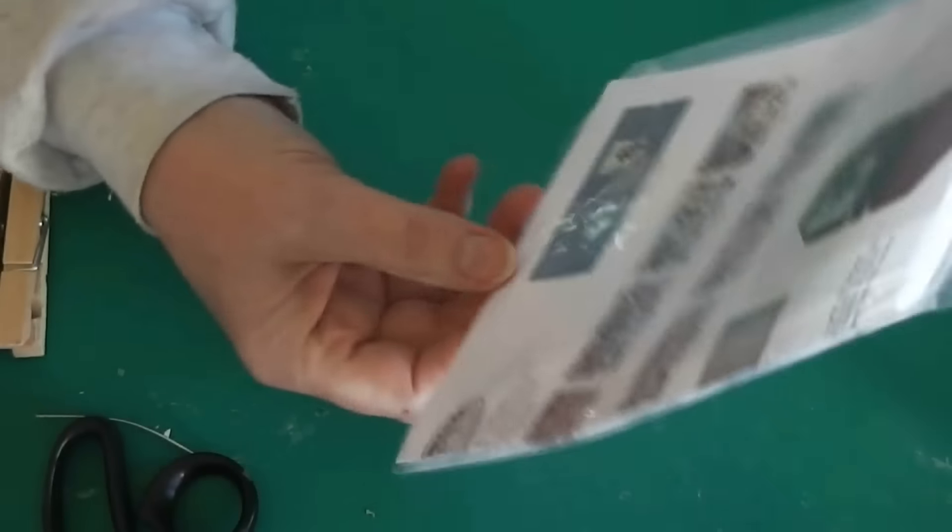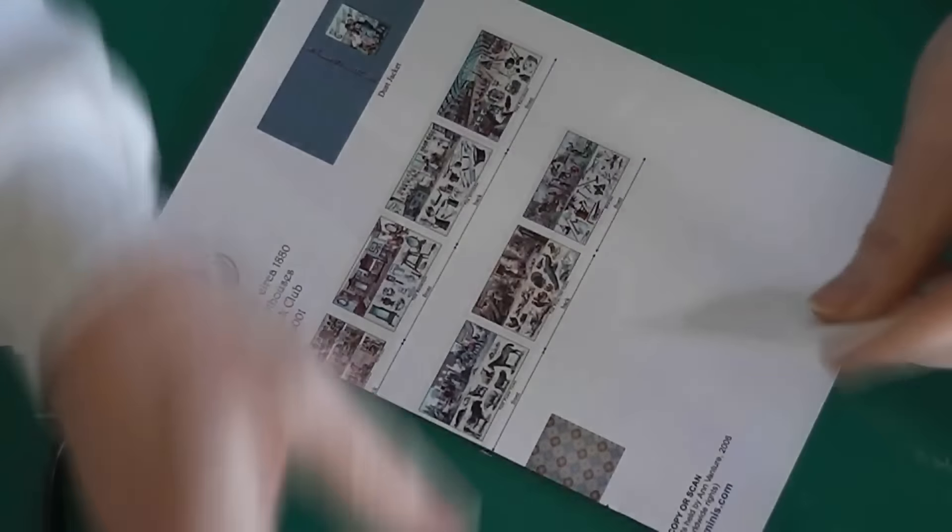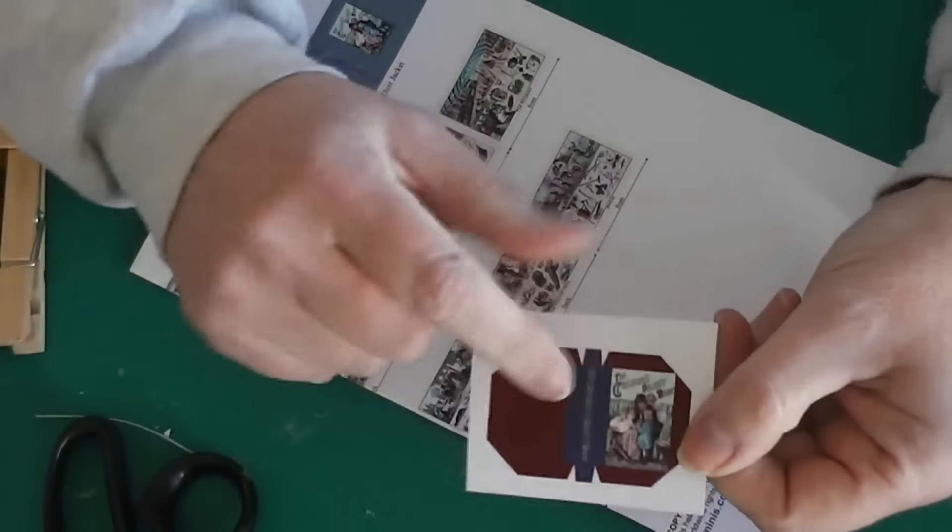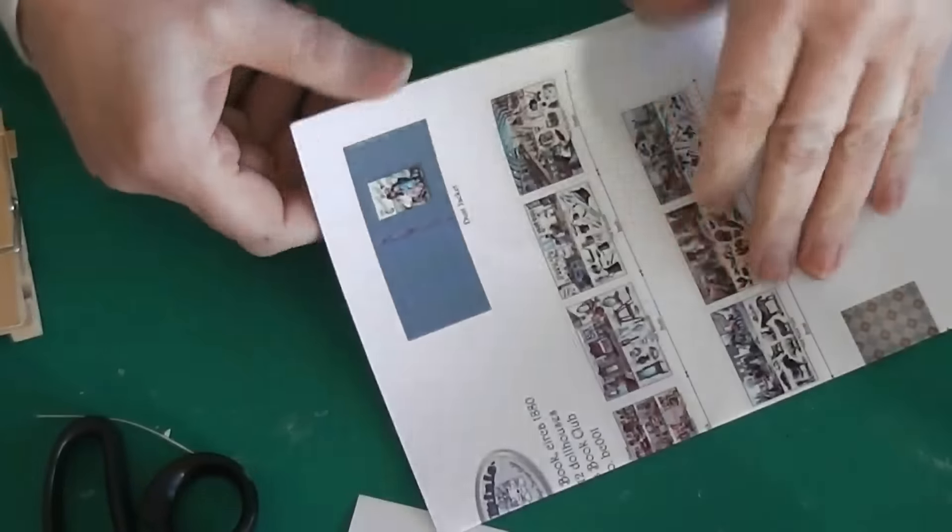This is a children's object book, and it's circa 1880. It looks like a beautiful book. So I'm going to show you the parts, and then we are going to get started.